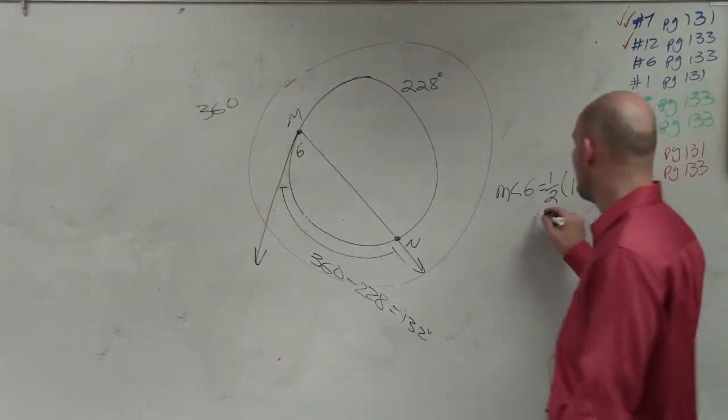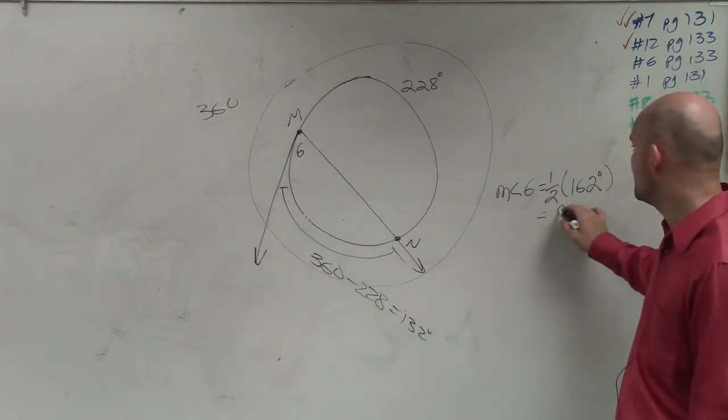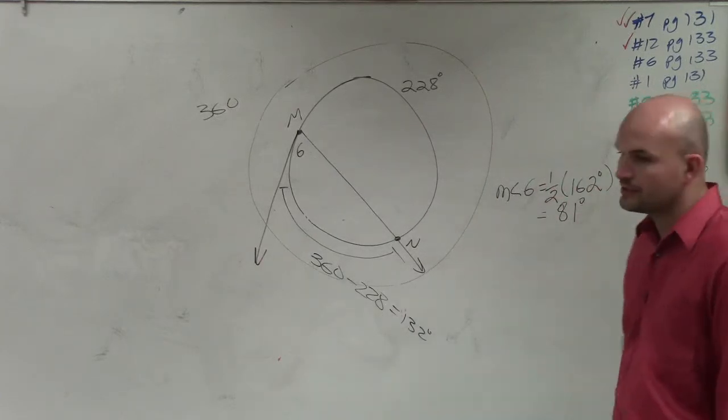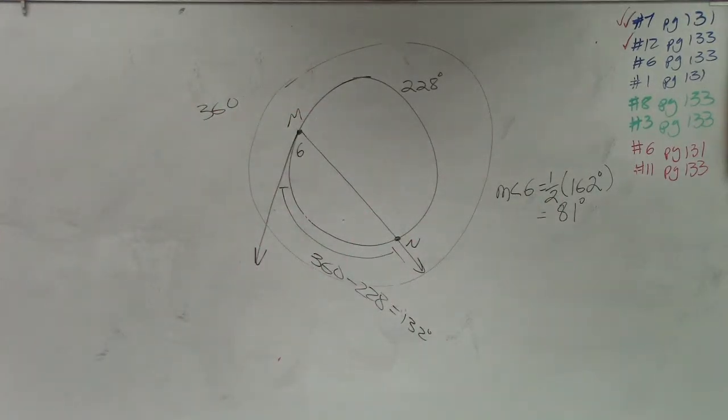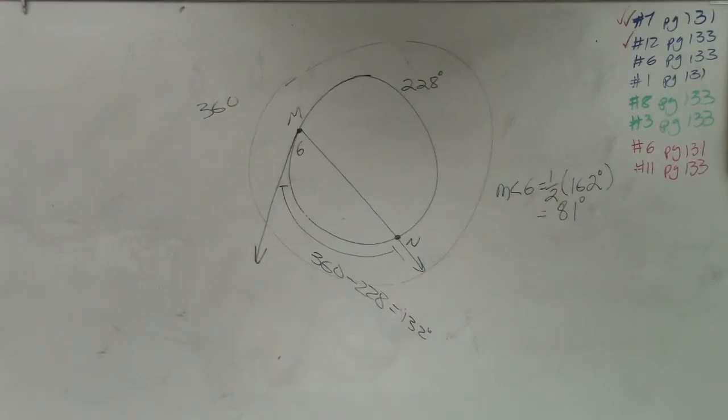Therefore, I take 1 half of 162 degrees and I get 81 degrees. That was one of the formulas that we talked about with secant and tangent lines, that it's just like the one...